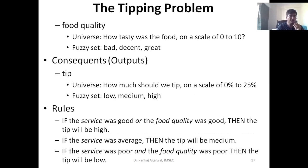Now, the outputs — the output was what? The tip. The universe could be from 0% to 25% of the total bill as the tip. Again, we can classify it into three categories — the tip can be low tip, medium tip, or high tip. We can define the value ranges for each, for example high can be from 20% to 25%. This is how input and output have been prepared, converting crisp inputs into fuzzy inputs and outputs.